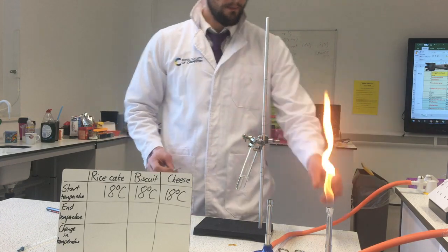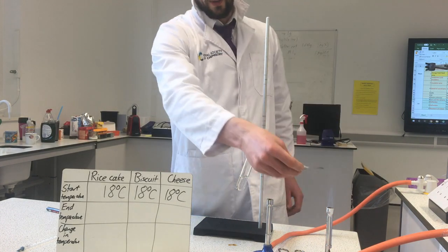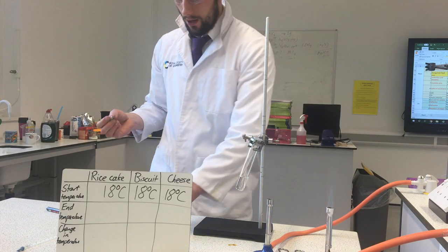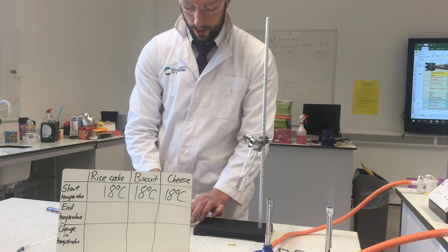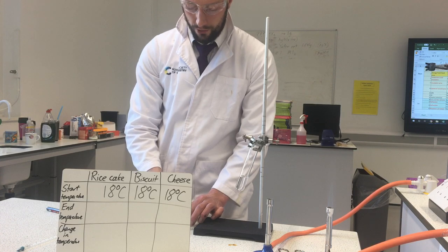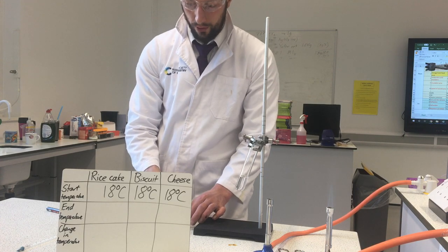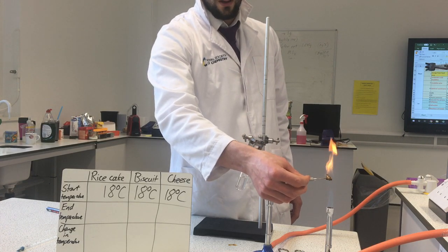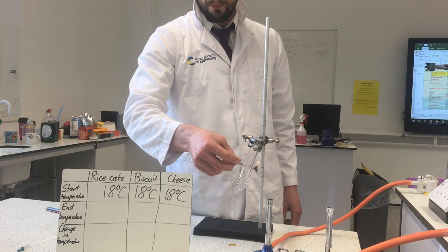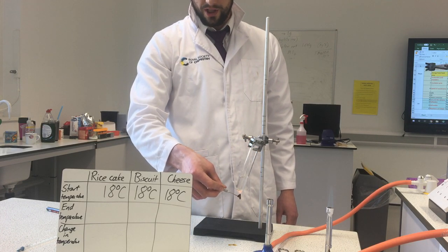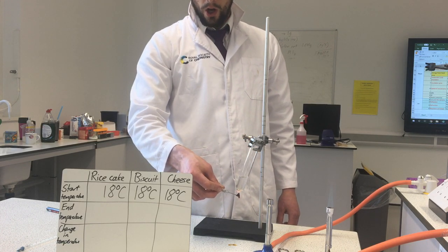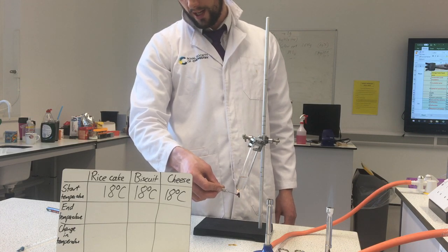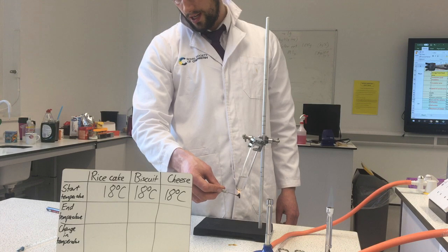What I'm going to do here is take a pin, get it nice and hot to help it stick into my food, and then put my food on the pin. The first food I'm using is rice cake, as I'm sure you can see in my table. I light the rice cake on fire and then once it's burning I'm going to use it to heat the water. The burning is transferring the chemical energy in the rice cake to thermal energy, which is heating the water.